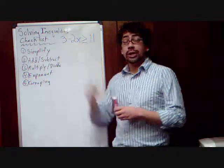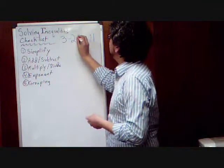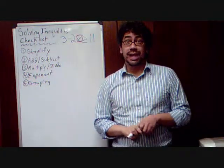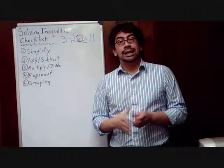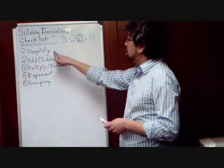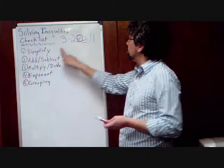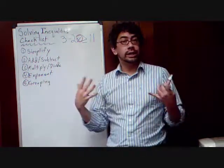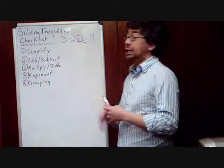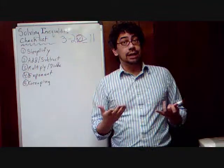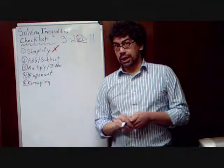But, let's take this inequality. 3 minus 2x is greater than or equal to 11. Again, we're trying to isolate the variable, the x. Focus all your attention on getting that x by itself. So, let's start our steps. Simplify. Do we have anything to simplify on either side of the inequality symbol? If we look at it, no. 3 minus 2x is already simplified. Obviously, 11 is already simplified. So, we don't have to do this step in this case.